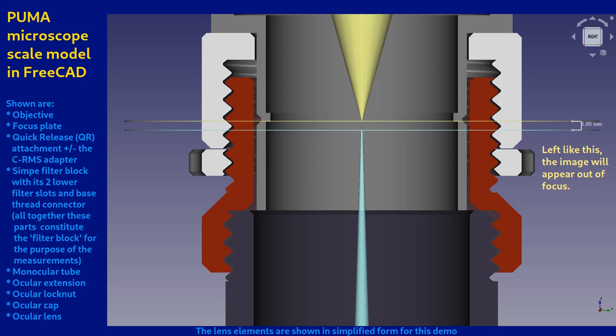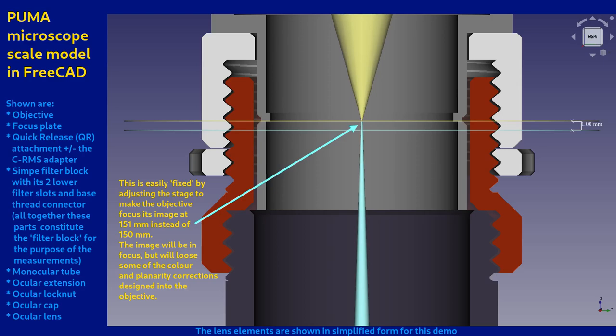You can still easily focus an image of the specimen onto this ocular focal plane by focusing the stage, but then the focused image will not be the best quality you can get from your objective. The effects of this will be a minor loss of planarity and chromatic correction in the focused image. There will also be some loss of parfocality when changing objectives. In most practical cases, these effects will be very slight and probably not noticeable.